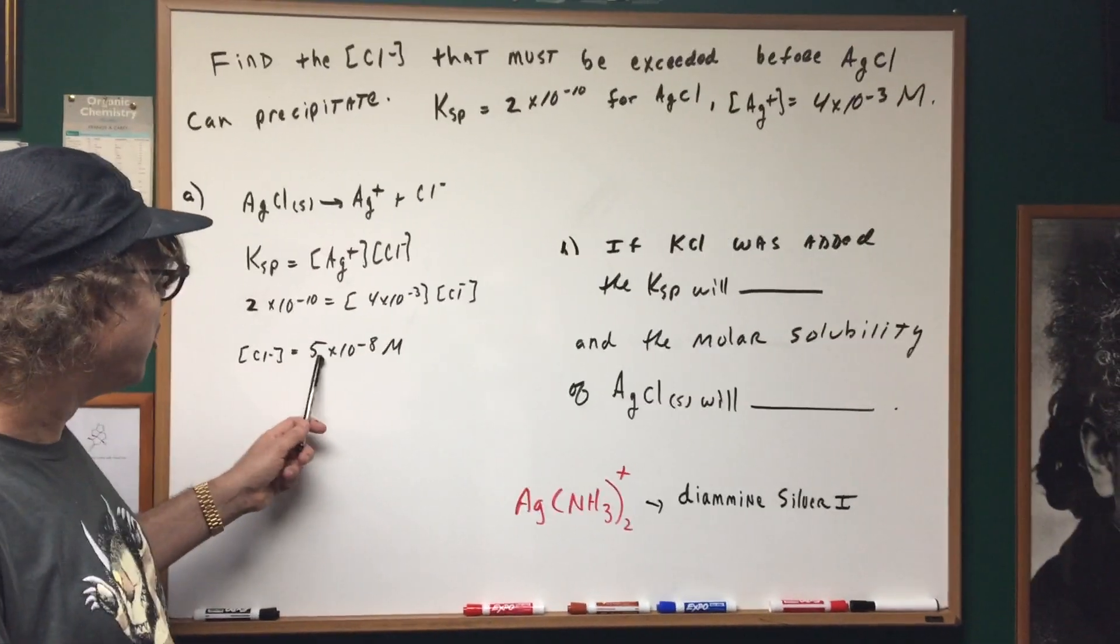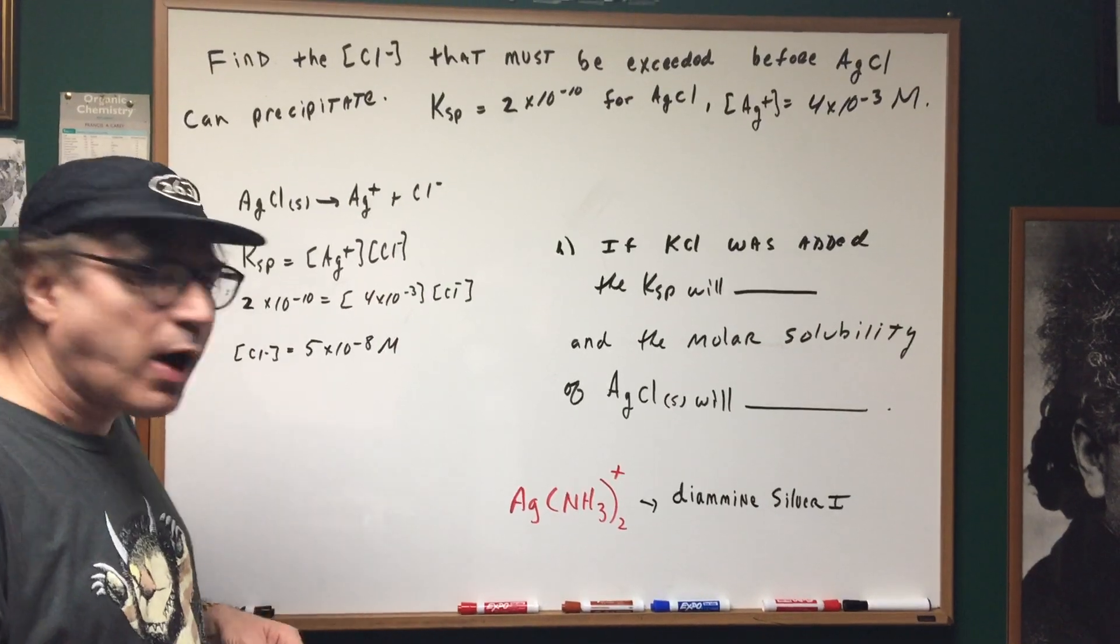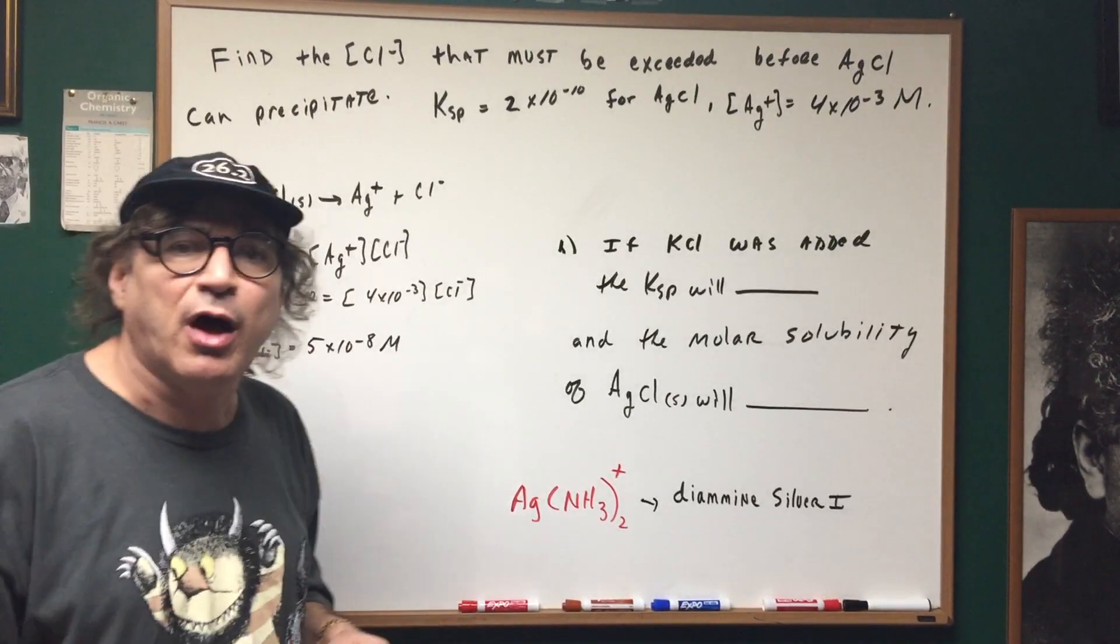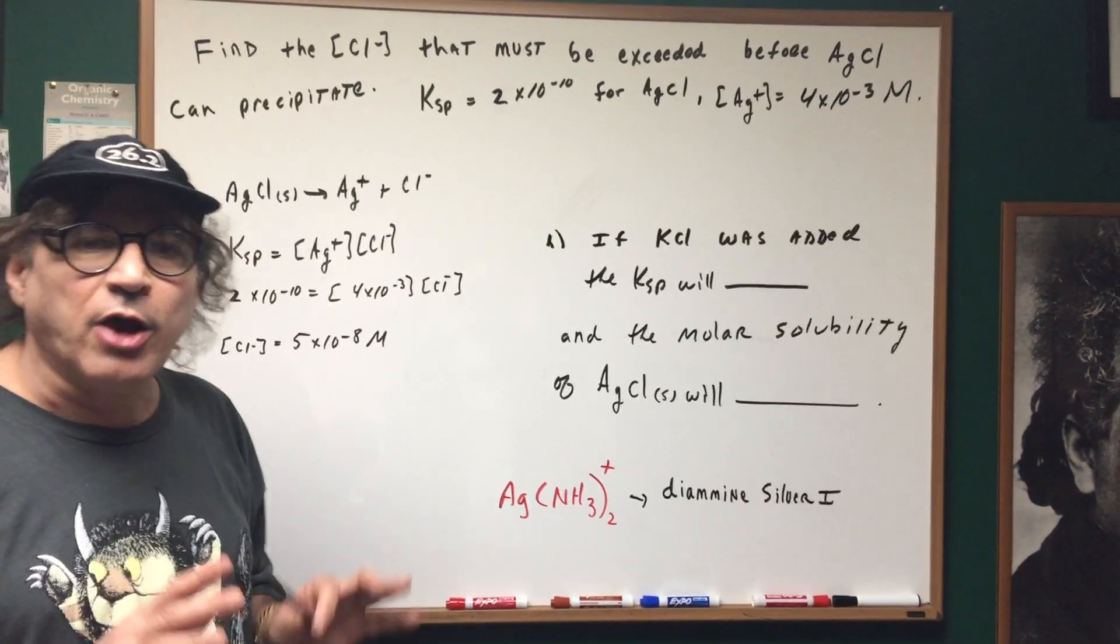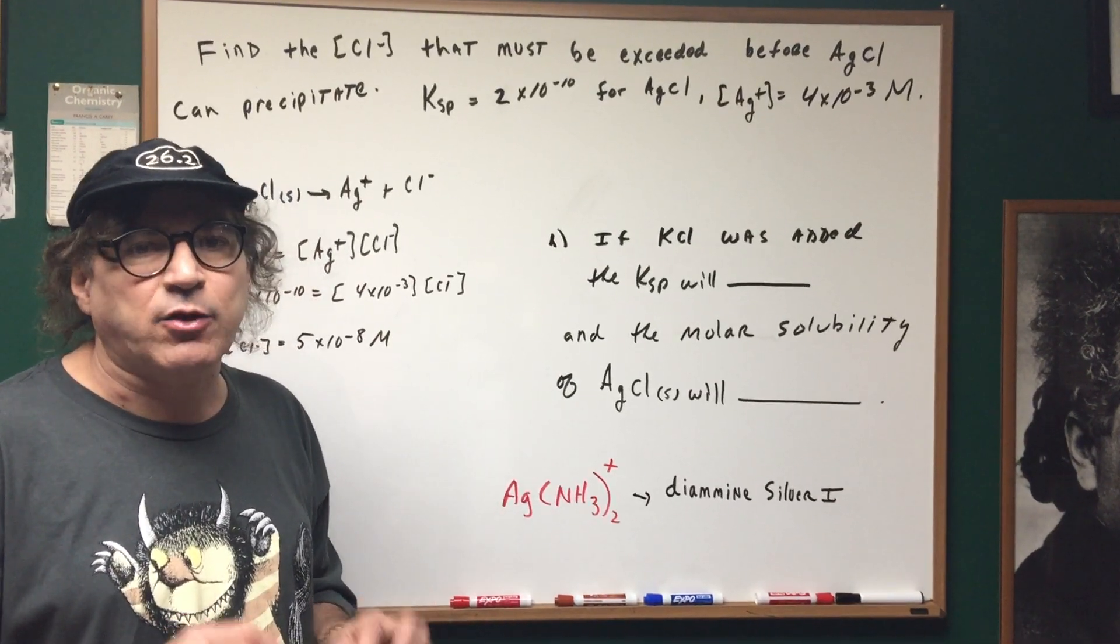So the amount needed to go beyond, you got to go beyond 5 times 10 to the minus 8 molar of chloride ion. A sure bad question for the DAT and quick and dirty.